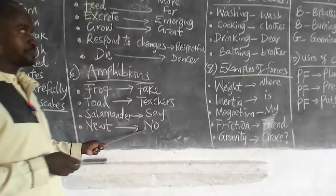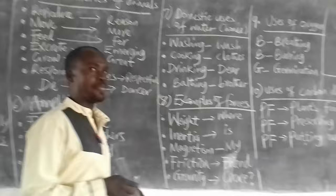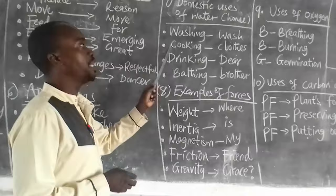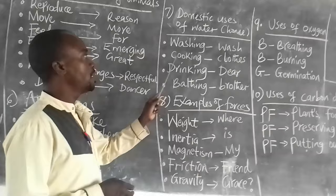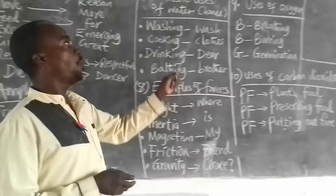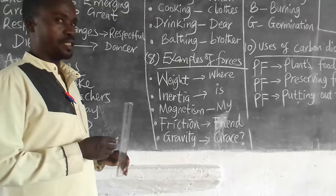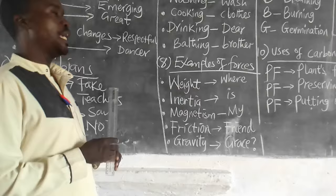Number seven, domestic uses of water. Water is used for washing, cooking, drinking, and bathing. Mnemonic: wash clothes dear brother.